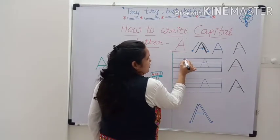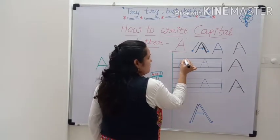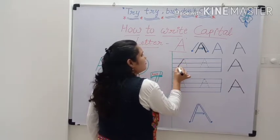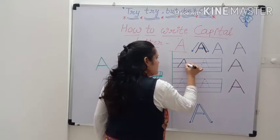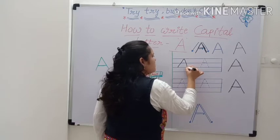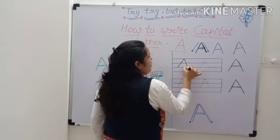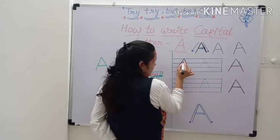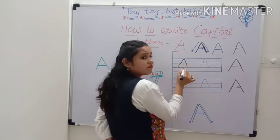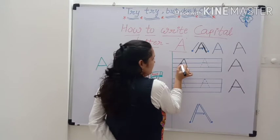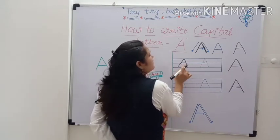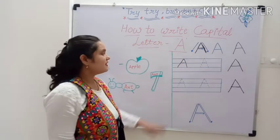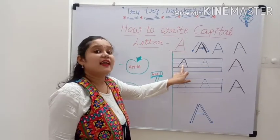Starts from the top. And draw a slanting line downwards. Again go to the top. Draw another slanting line down to the opposite side. Now go a little below the middle and draw a slanting line across. A. This is letter A.